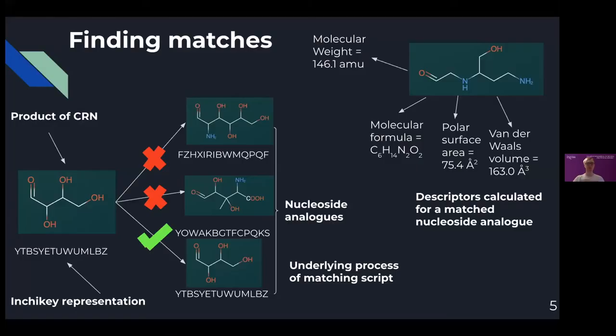So how do we go about doing this? Well firstly, we produced a matching script which identified which products of each CRN were found in the nucleoside analogue library. This script converted all molecules into their InChI key representation, a code which encodes characteristics of a molecule including its molecular formula and bond pattern. We then found matches between each CRN output and the nucleoside analogue library by considering each product of a CRN in turn and then iterating through the entire nucleoside analogue library and comparing their respective InChI key representations to identify whether or not they were matching. So no match, no match, these two are matching.